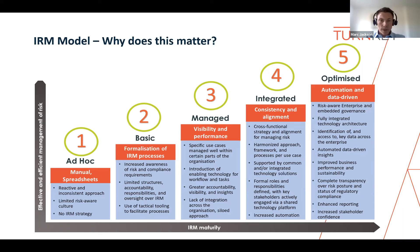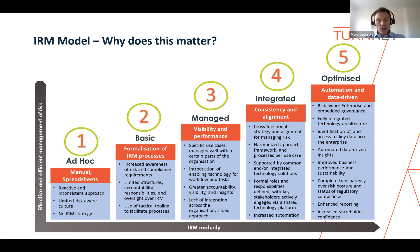A lot of organizations we speak to tend to reside somewhere between levels one to three. The important point is knowing where you are on this model, as this helps you understand what's required in terms of next steps. We've helped organizations find strategies to improve their maturity, and a critical part of that strategy is understanding what success looks like over the next three to five years. It needs to be realistic and aligned with the underlying culture of the organization.